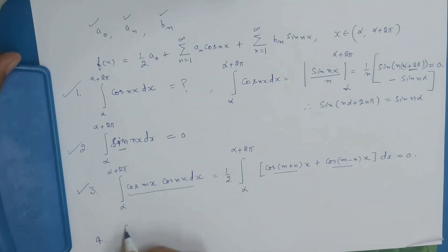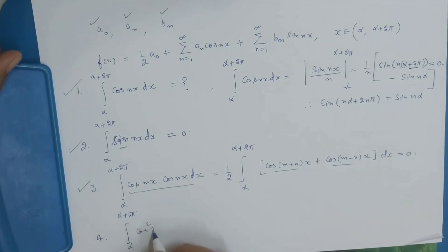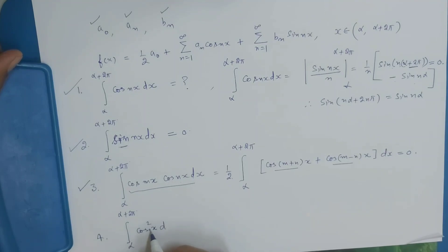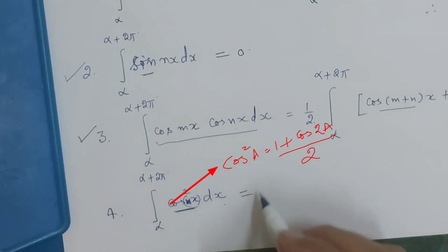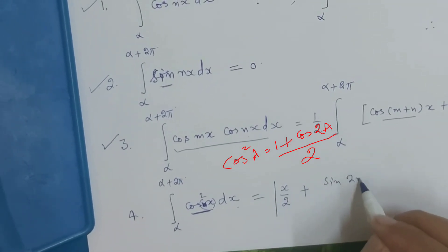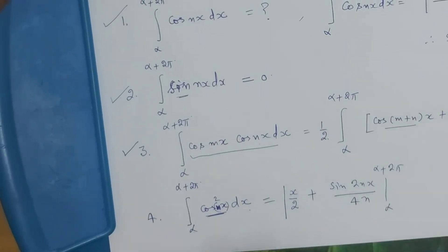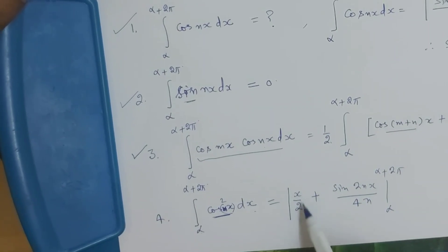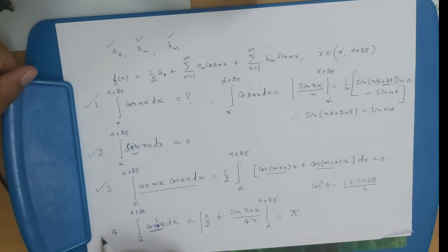Number 4: ∫[α to α+2π] cos²(nx) dx. On integrating we find [x/2 + sin(2nx)/(4n)] from α to α+2π. The sin term is 0 (periodic function), but the x/2 term gives a result — ये 0 नहीं होगा। That should equal π. So ∫ cos²(nx) dx = π. Similarly, number 5: ∫[α to α+2π] sin²(nx) dx = π.